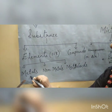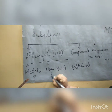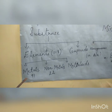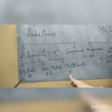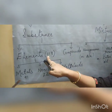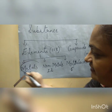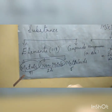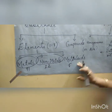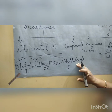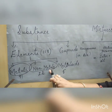Till date we know 91 are metals, 22 are non-metals, and 5 are metalloids. So 91 plus 22 plus 5 equals 118. We have to study metals and non-metals. Let me also give you a short definition for metalloids: metalloids are those elements which have the properties of both metals and non-metals.